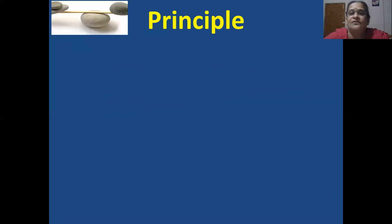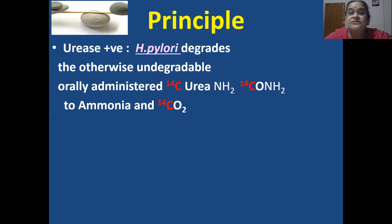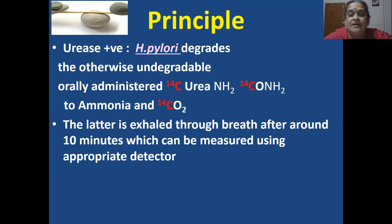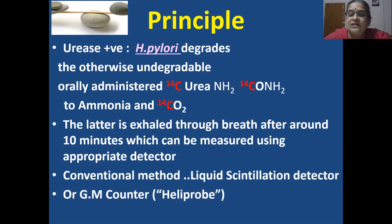The principle of this test: urease-positive H. pylori degrades the otherwise undegradable, orally administered 14 carbon urea — NH2-14CO-NH2 — to ammonia (NH3 or NH4+ ions) and 14 carbon dioxide. This 14CO2 is exhaled through breath after around 10 minutes and can be measured using an appropriate detector. The conventional method is a liquid scintillation detector; the most commonly used is the GM counter-based Helipro.